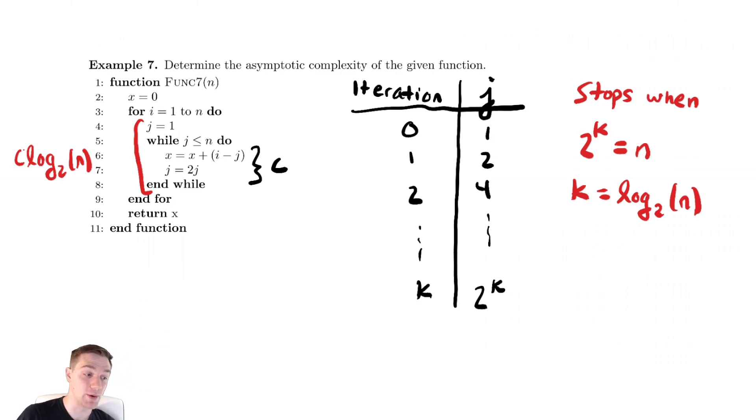So for the for loop we want to express this as a summation. The cost of each run of that for loop would be c log base 2 of n. So, the for loop,